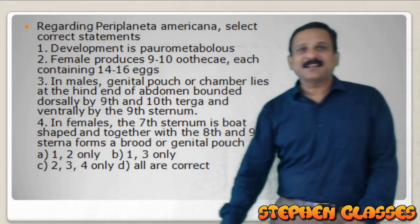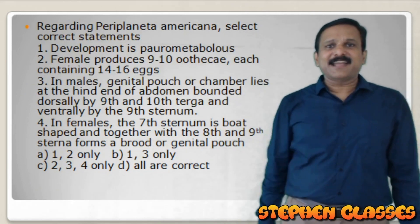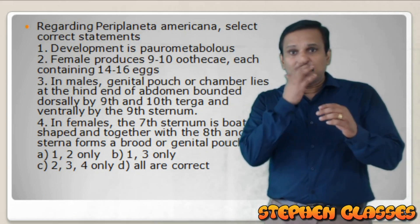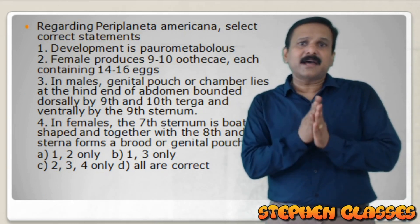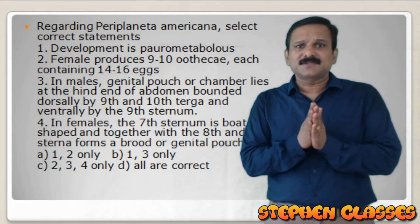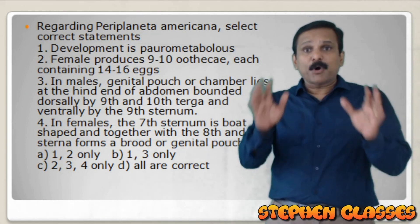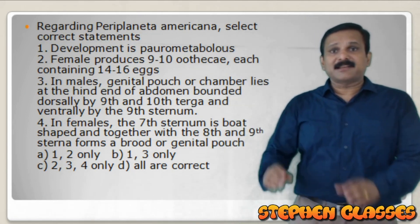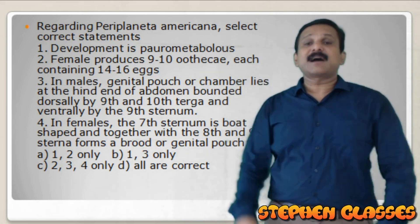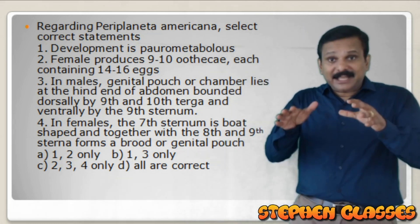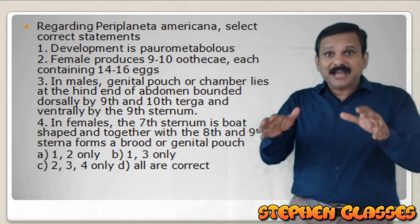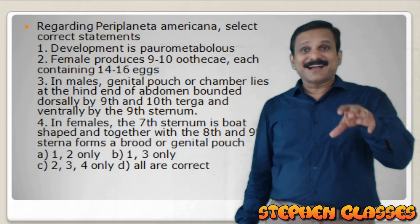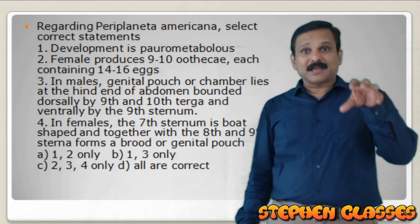Regarding Periplaneta americana, select the correct statements. Periplaneta americana undergoes paurometabolous development - a gradual kind of metamorphosis. There will be 13 times moulting - shedding of exoskeleton - and the nymph gradually transforms into an adult.